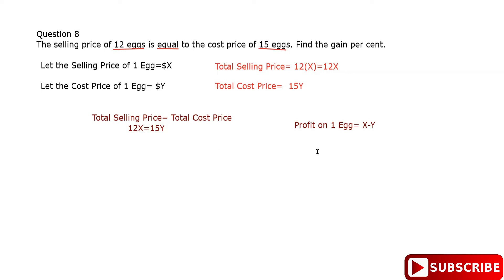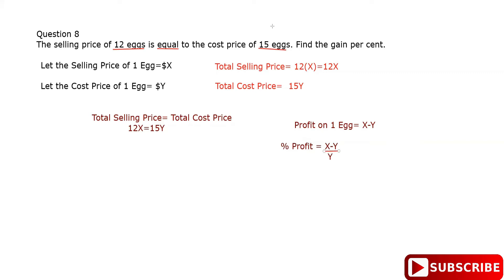Now I can find the percentage profit. Percentage profit is profit divided by cost price, multiplied by 100. So it's (x minus y) divided by y, multiplied by 100.